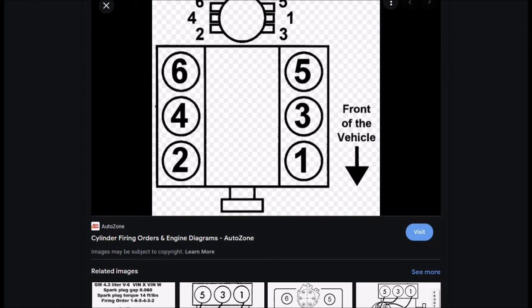An inline six or something like that would just have one bank and one long row of spark plugs. And if it was a V8, it would have four on each side.